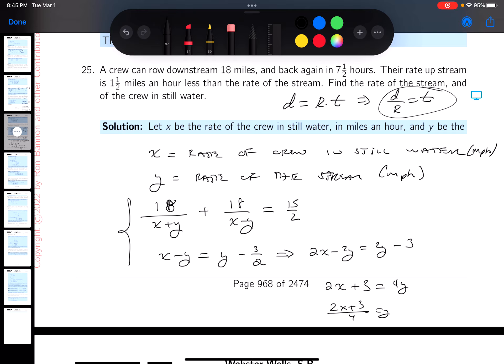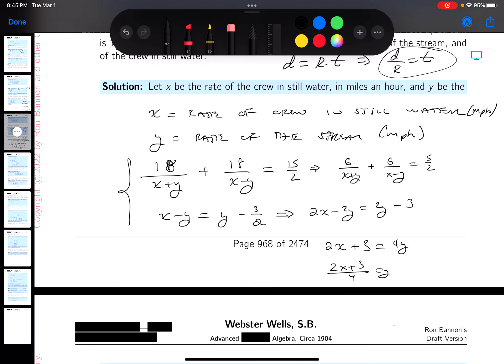I'm gonna divide both sides by 3, and you would get 6 over X plus Y plus 6 over X minus Y equals 5 halves. I'm gonna simplify a little more.